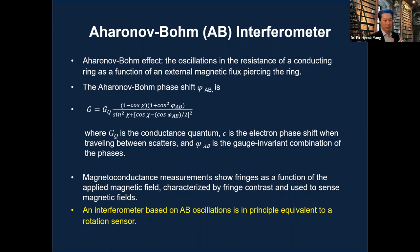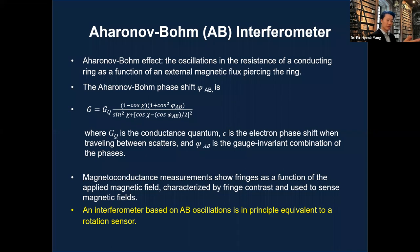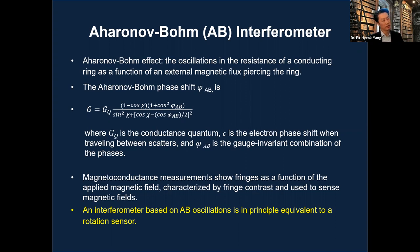Why introduce the Aharonov-Bohm effect while discussing gyroscopes? An interferometer parameter based on Aharonov-Bohm oscillations is in principle equivalent to a rotation sensor using the Sagnac effect, because in Sagnac you detect fringe contrast — the same as in AB oscillations. You can derive equivalent equations relating AB oscillations to the Sagnac effect, so demonstrating AB oscillations from certain structures implies the structure will work for Sagnac.